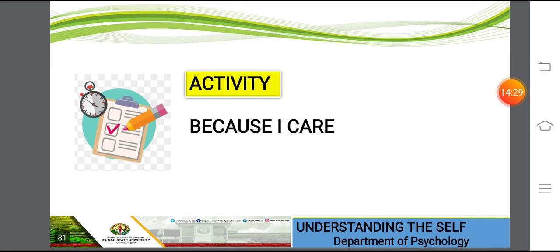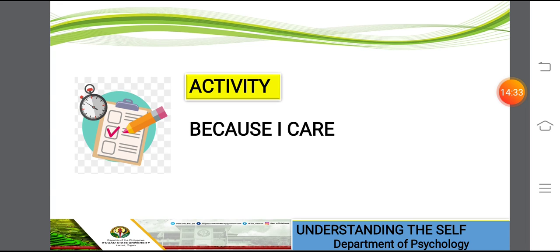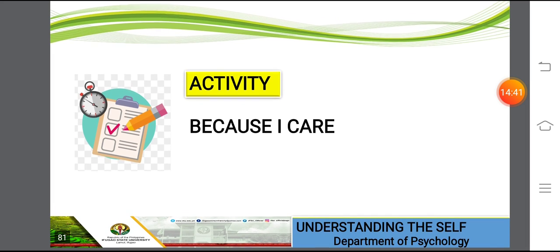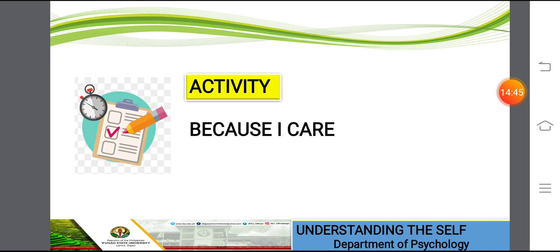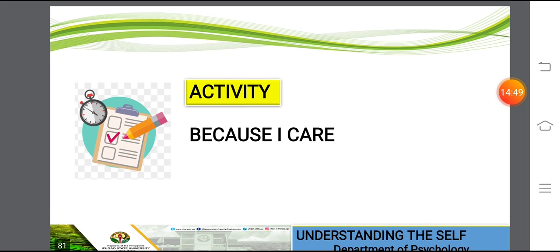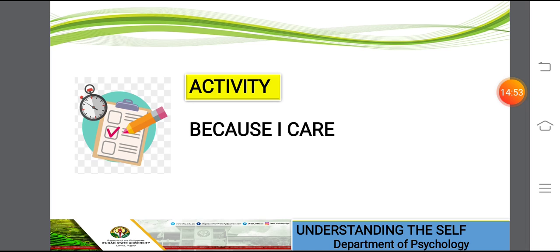I visited the guidance center and asked for the top 10 issues and concerns that college students of IFSU present to our guidance counselor, and teenage pregnancy is one of the prevalent issues the IFSU community experiences. In your workbook, the first column is for programs and activities to reduce teenage pregnancy, and the second column is for suggested strategies or methods. The strategies or methods should be concrete, not too idealistic. Activity 16 is very important, so please accomplish it. Thank you so much.